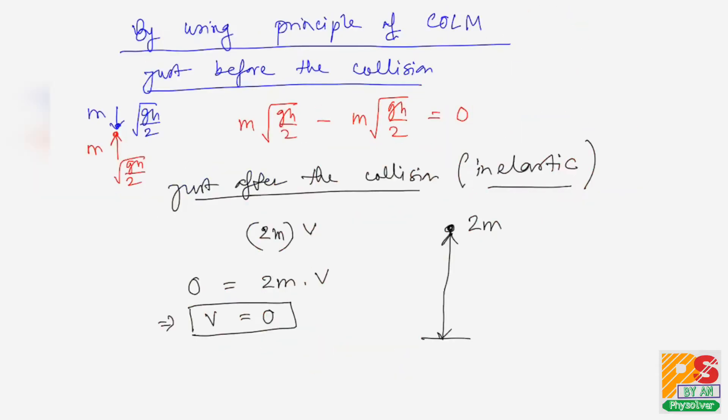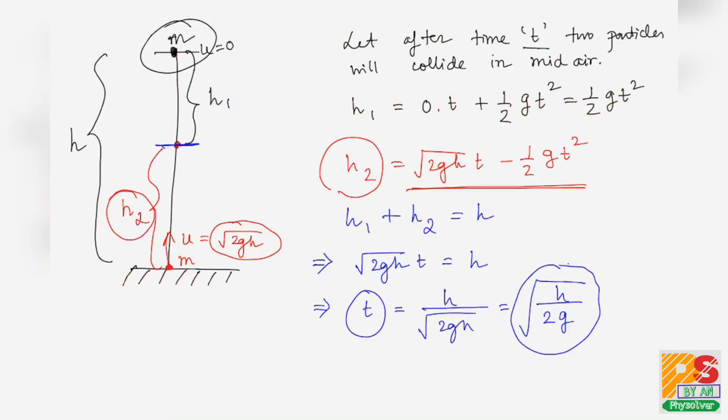Just after the inelastic collision, the two bodies come to rest. The combined mass of 2m is situated at a height of 3h/4 above the ground with initial velocity zero.